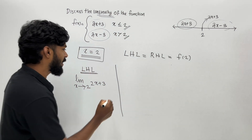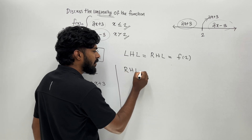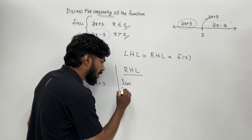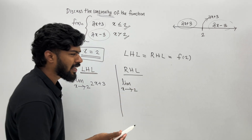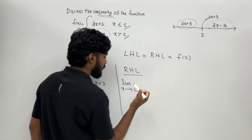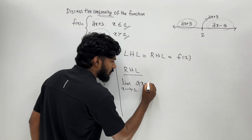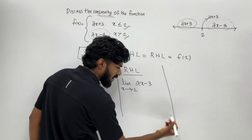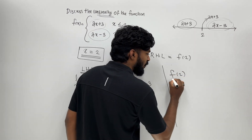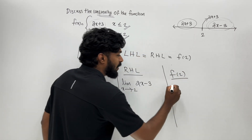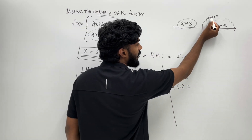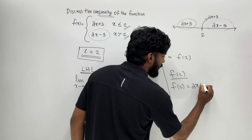This is simple. For the left hand limit, when x tends to 2 from the left, we use 2x plus 3. For the right hand limit, when x tends to 2 from the right, we again evaluate. F of 2 uses the expression 2x plus 3.